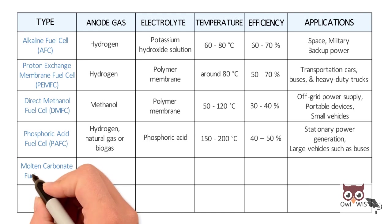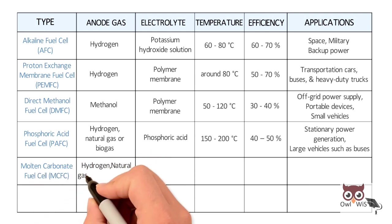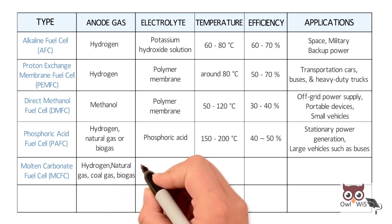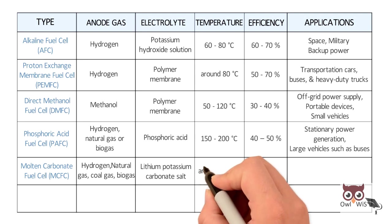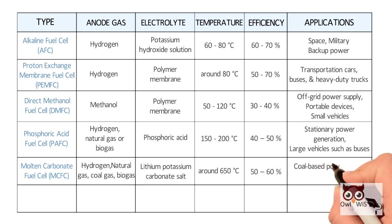Molten carbonate fuel cell, MCFC. Hydrogen, natural gas, coal gas and biogas is used at the anode. Lithium potassium carbonate salt is used as electrolyte. Working temperature is around 650 degree Celsius with 50 to 60 percent efficiency. Used in coal-based power plants, industrial and military.